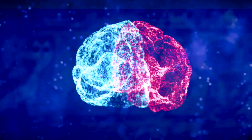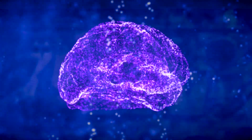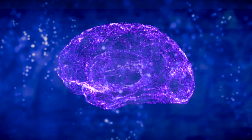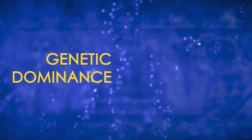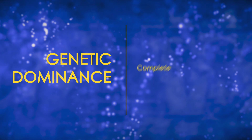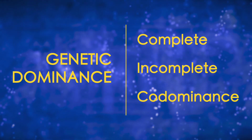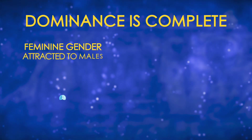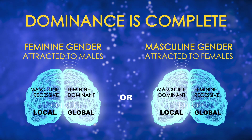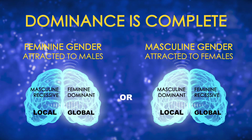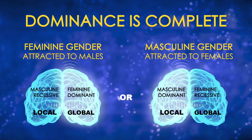The brain's local and global operating systems either work separately or in combination, depending on the type of genetic dominance that we inherit. Genetic dominance determines how two design elements such as masculine and feminine gender relate to one another. There are three types of genetic dominance: complete, incomplete, and co-dominance. Complete dominance is the most common type. When genetic dominance is complete, we inherit binary gender. Complete dominance regulates the brain's operation by ensuring that one operating system, along with its viewpoint and gender, completely dominates the other.